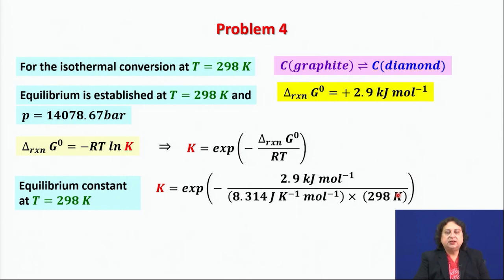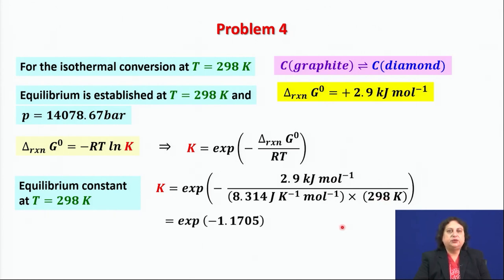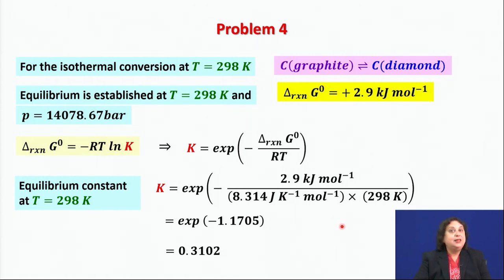Substituting the values: ΔG°rxn = 2.9 kJ/mol, R is the universal gas constant, and T = 298 K. The equilibrium constant turns out to be exp(−1.1705), which is a very small number.